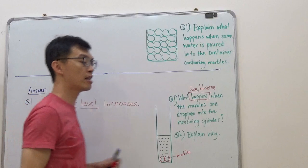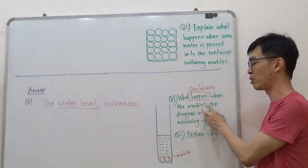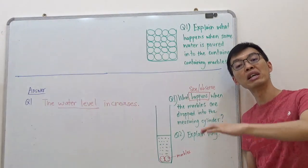That would be the answer for the question because the question asks you what happens when the marbles are dropped into the measuring cylinder. So, only the water level increases.